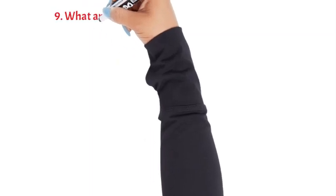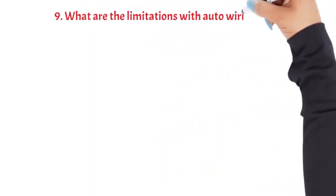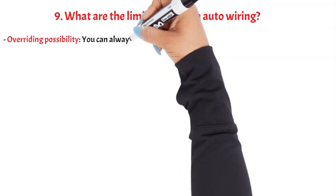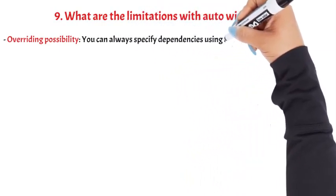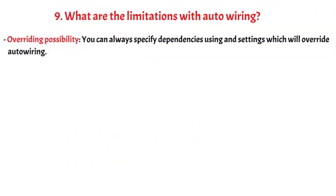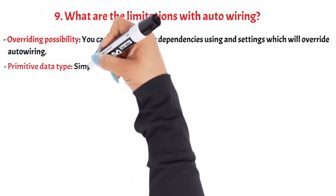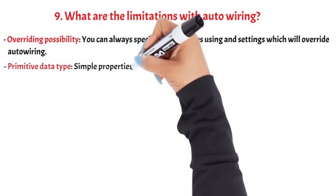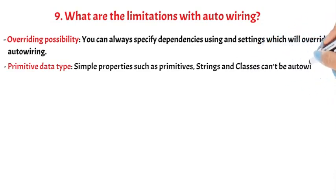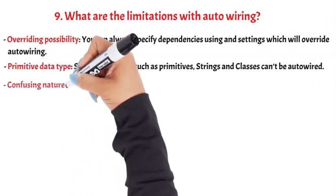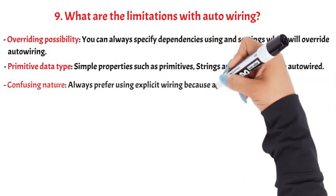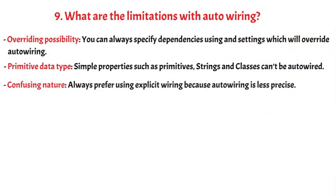Question 9: What are the limitations with auto-wiring? Overriding possibility: you can always specify dependencies using explicit settings which will override auto-wiring. Primitive data type: simple properties such as primitives, strings, and classes can't be auto-wired. Confusing nature: always prefer using explicit wiring because auto-wiring is less precise.